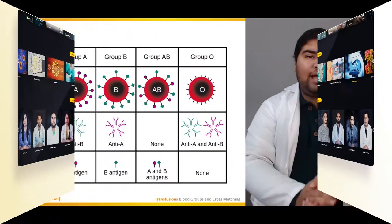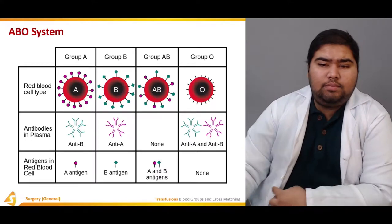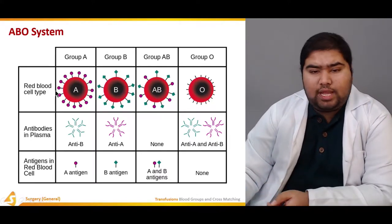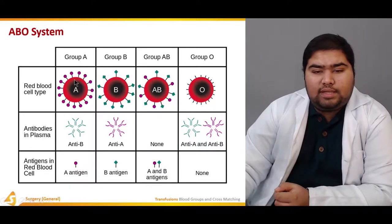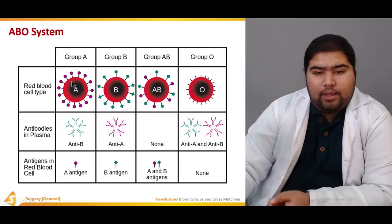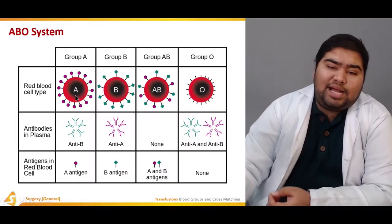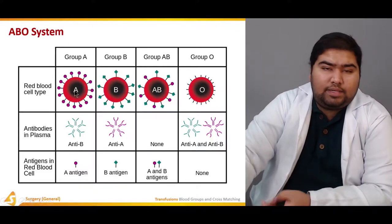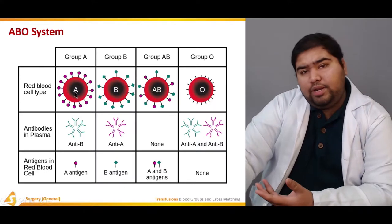This diagram summarizes the ABO system. Let's go through the diagram. This is a red blood cell — this is blood group A. Blood group A has allele type A; this is the phenotype type A.